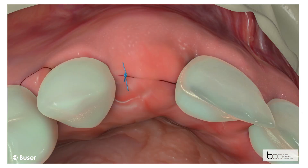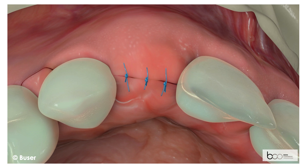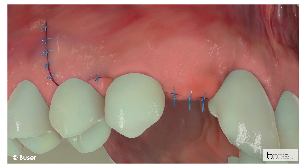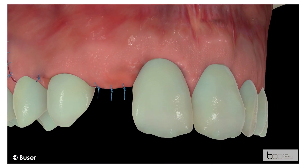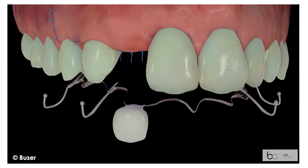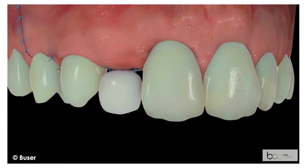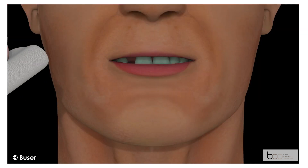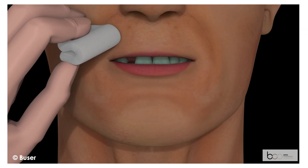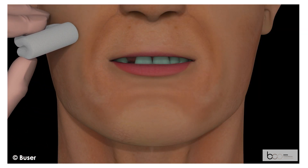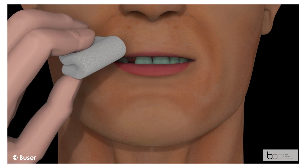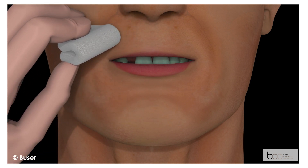Several sutures are applied to achieve close adaptation of the wound margins. This is followed by insertion of the provisional prosthesis, which has been shortened in the edentulous area to avoid direct tissue contact. A pressure dressing is applied to the upper lip to minimize post-surgical swelling in the first two days of healing.